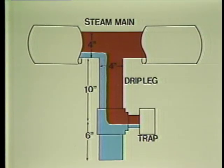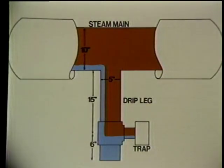Drip legs should be the same size as the steam mains on pipe sizes up to 4 inches in diameter. Above 4 inches, they should be at least one half the size of the main, but never less than 4 inches. The depth should be at least one and one half times the diameter of the main, but never less than 10 inches.